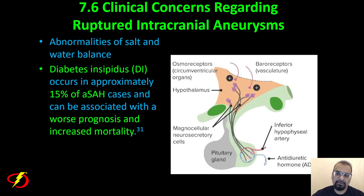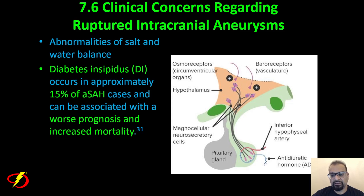Another common complication of aneurysmal subarachnoid hemorrhage is diabetes insipidus, occurring in approximately 15% of cases and associated with the worst prognosis and increased mortality. All abnormalities in salt and water balance — including syndrome of inappropriate ADH secretion (SIADH) and cerebral salt wasting — are associated with worse prognosis and increased mortality.